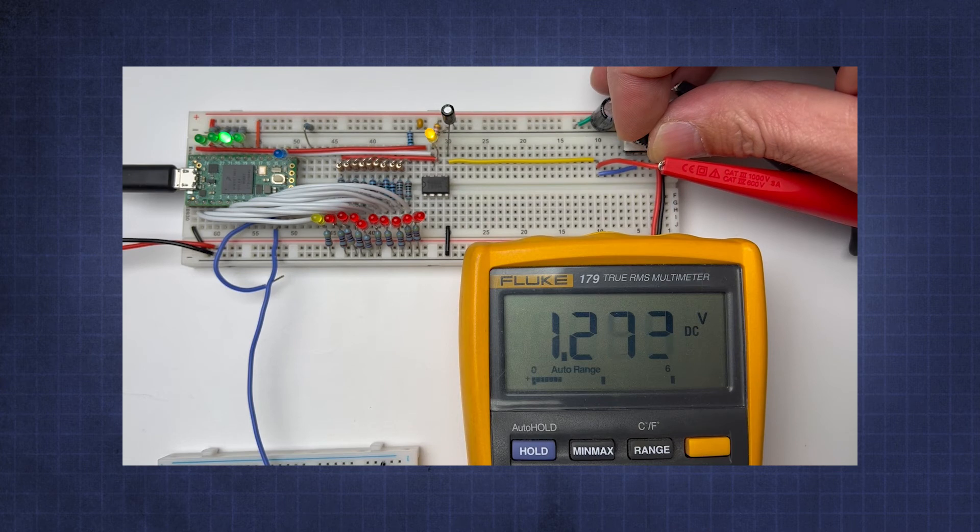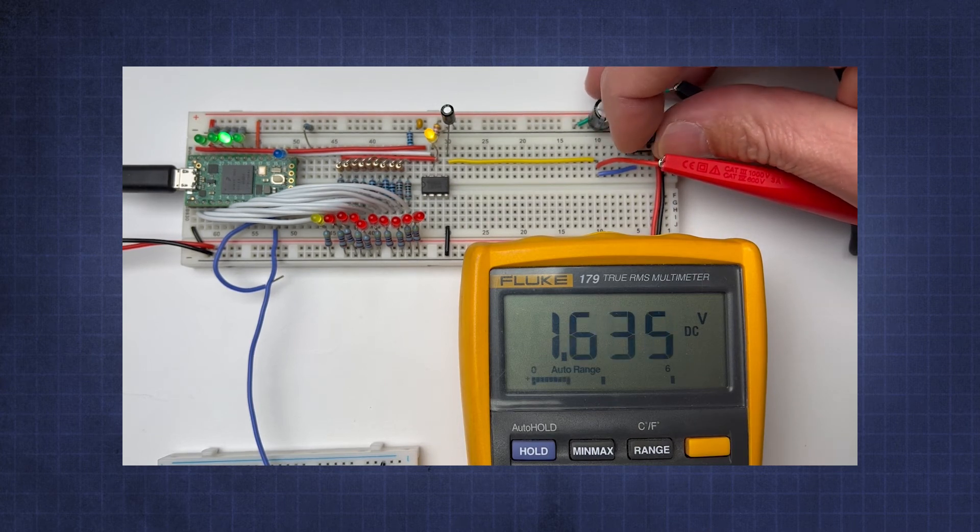INL, DNL, limiting our effective number of bits. But with any luck, we should be able to get within an LSB or two.